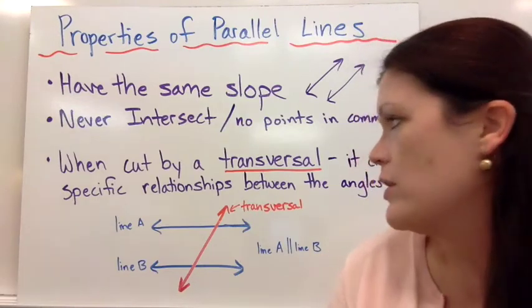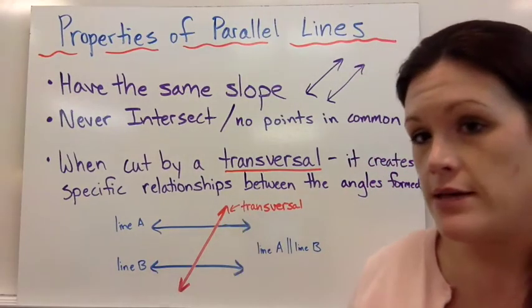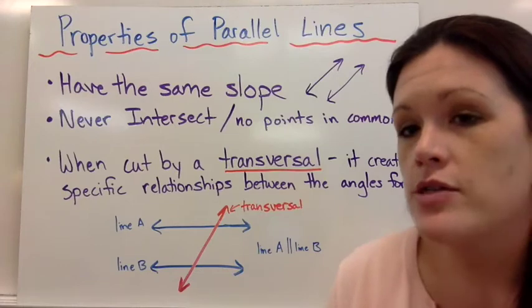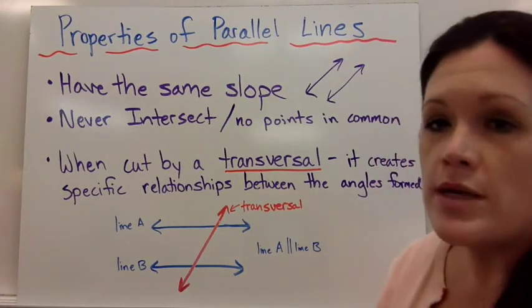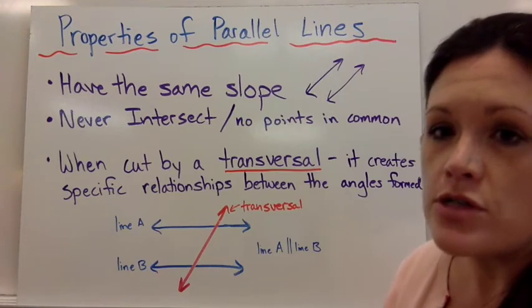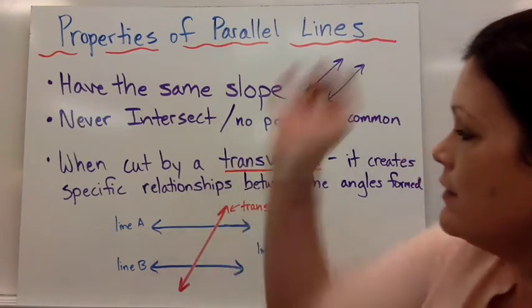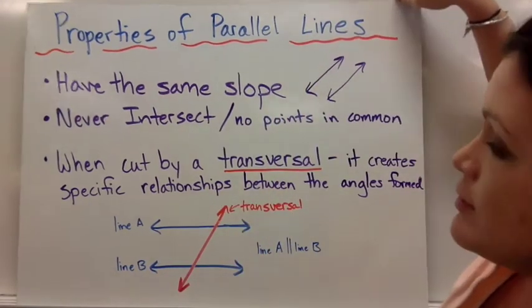But today we're going to talk about what happens if they're cut by this other third line that we call a transversal. There are some angle relationships that are formed, and we have to memorize what that means for our figure in order to solve some of the problems they'll give us. So let's check out some vocabulary.